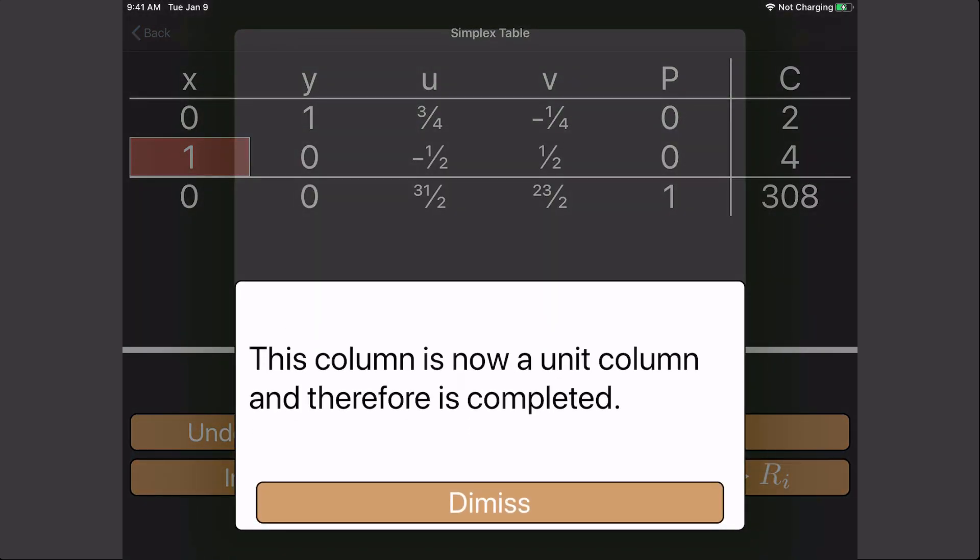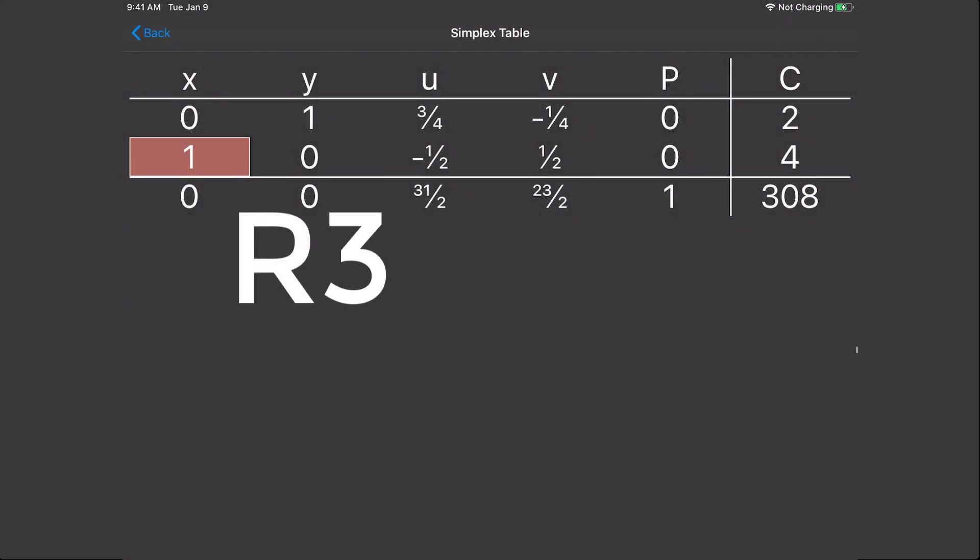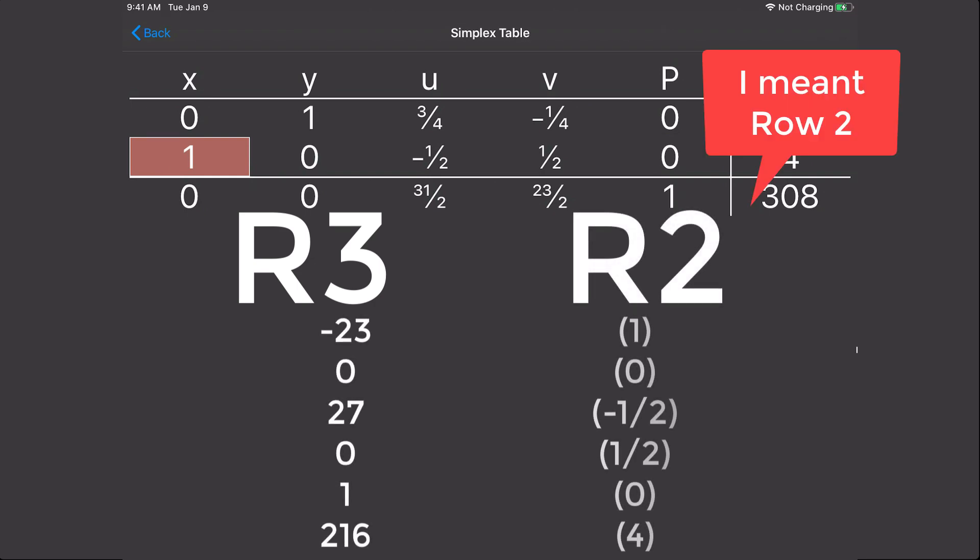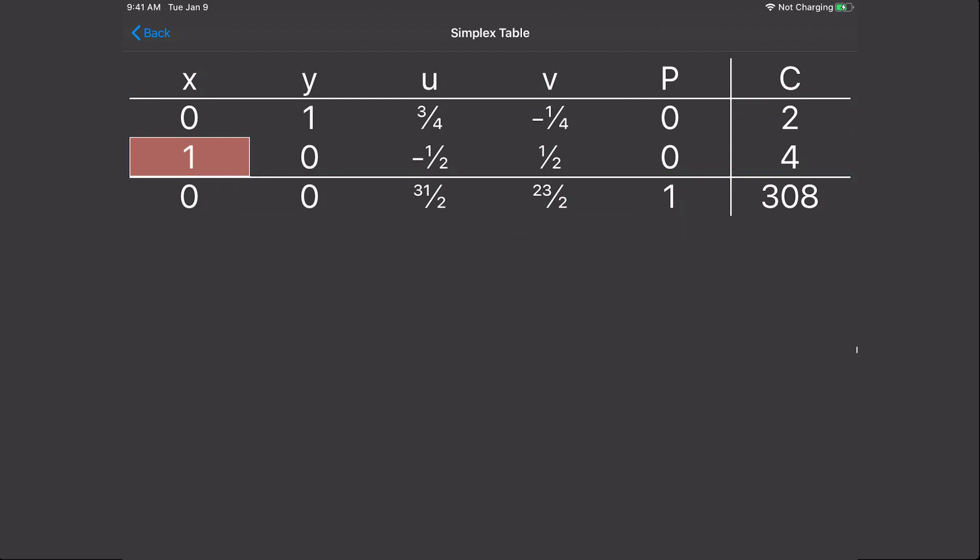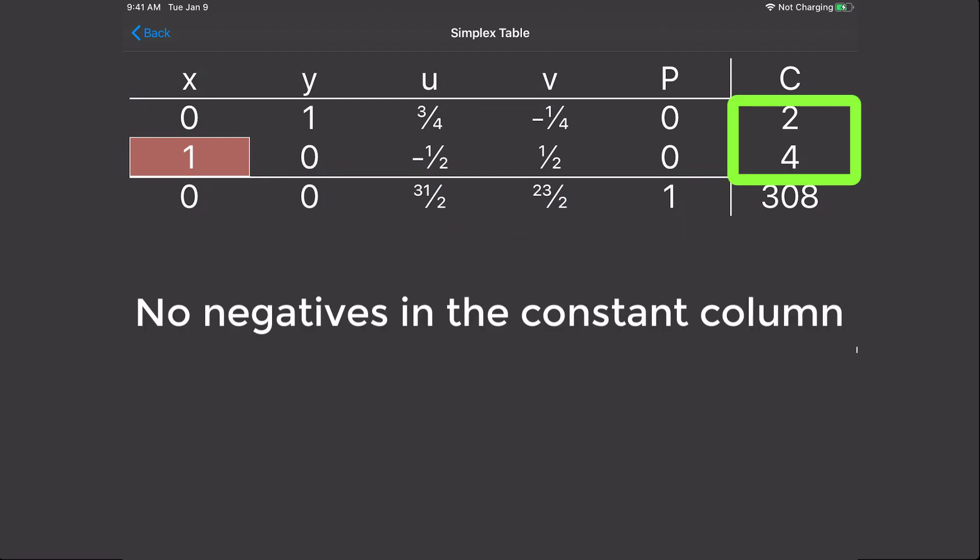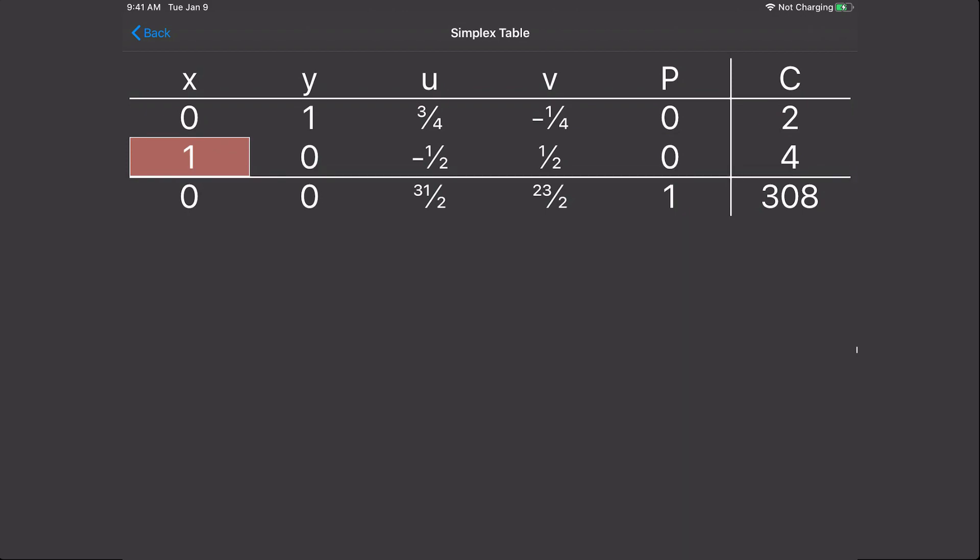And again, if you are doing this by hand or using a graphing or scientific calculator, you would just write out all the numbers in row 3, write out all the numbers in row 1, and manually calculate each one. We've now completed another iteration of the simplex method. Notice there are no negatives in the constant column and there are no more negatives in the bottom row. This means we are actually done and we can read our answer.